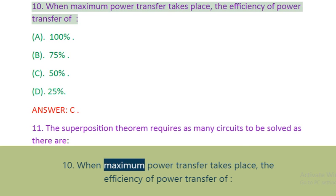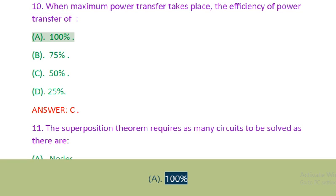Question 10: When maximum power transfer takes place, the efficiency of power transfer is. A. 100%. B. 75%. C. 50%. D. 25%. Answer: C.